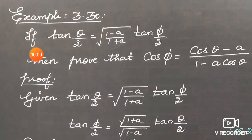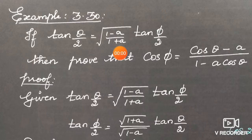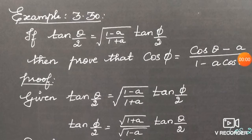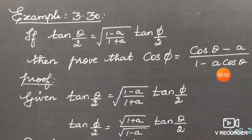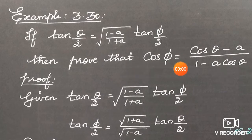Example 3.30: If tan(θ/2) is equal to √((1-a)/(1+a)) · tan(φ/2), then prove that cos φ is equal to (cos θ - a) / (1 - a·cos θ). So we need to prove this in terms of cos φ.